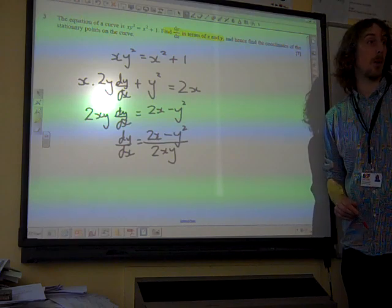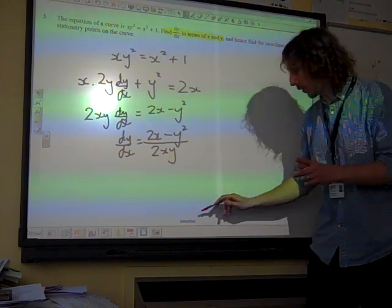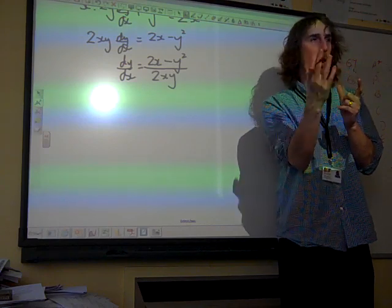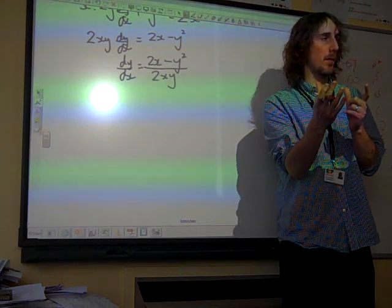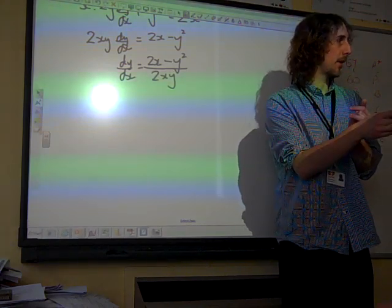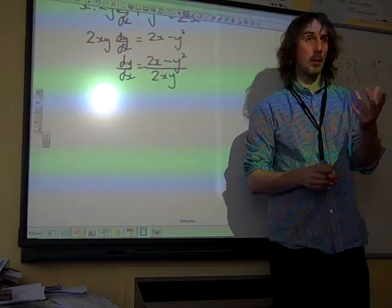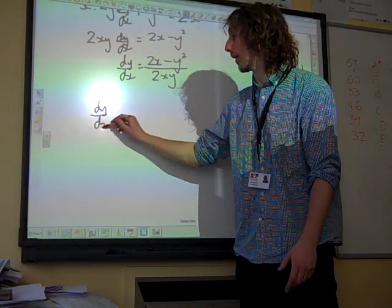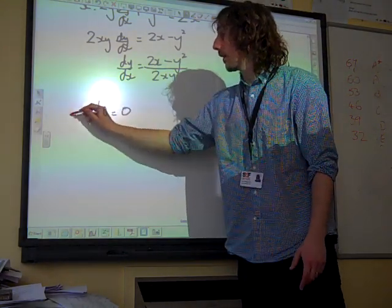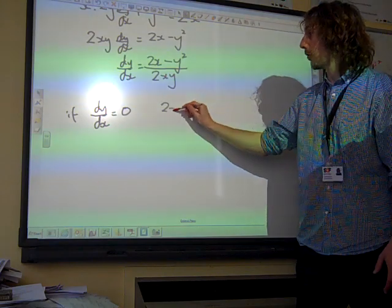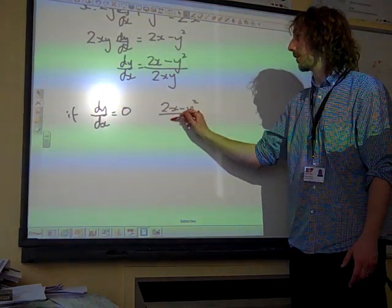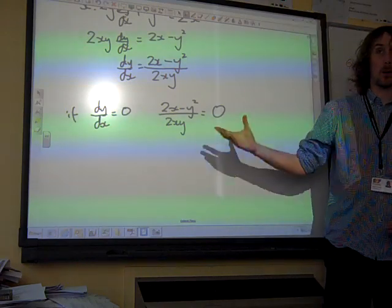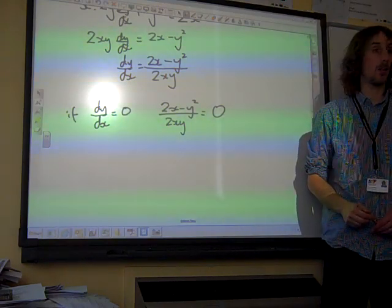Hence, find the coordinates of the stationary points on the curve. We've talked about this before, but when they write that, they mean find the values for which dy by dx equals 0. So actually, for you showing that you know that's what that means, if you're going to get a little bit of credit, actually show that you are trying to calculate the values of x and y that satisfy that equation.